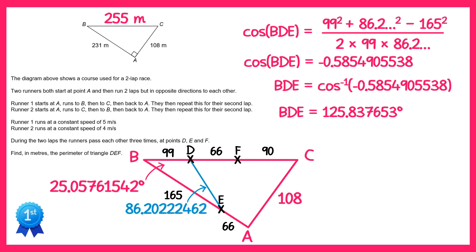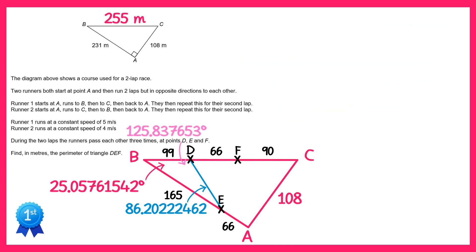So let's add the angle BDE to the diagram and now we can find angle CDE by subtracting angle BDE from 180. So that would give us this angle here at 54.16 and so on degrees.